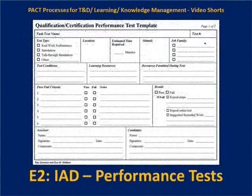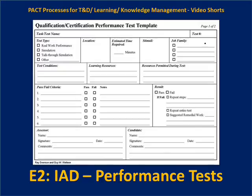The format can vary for a qualification or certification performance test. This is a template — it would capture certain information about the performer or learner being assessed, and identify the pass/fail criteria. There's a place for the assessor to designate whether or not the learner or performer actually passed or failed, and if so why, along with what conditions and resources they had, what the overall result is, and a place for signatures from everyone involved — the assessor and the candidate.